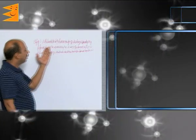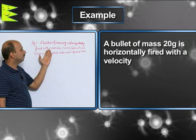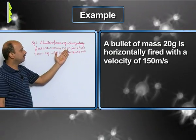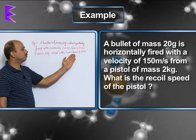See this example: a bullet of mass 20 grams is horizontally fired with a velocity of 150 meters per second from a pistol of mass 2 kg. What is the recoil speed of the pistol?